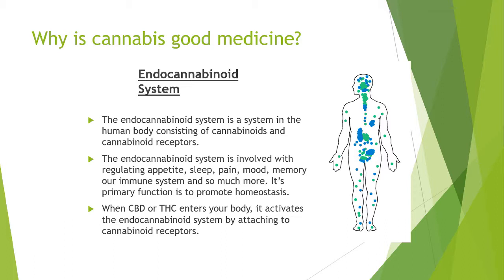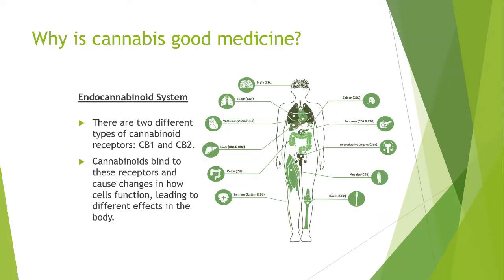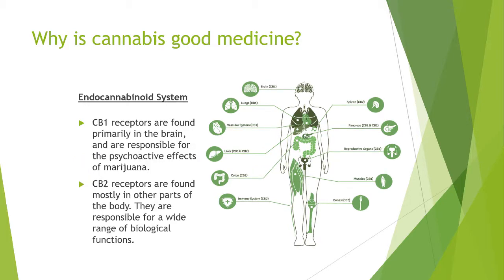When CBD or THC enters the body, it activates our endocannabinoid system by attaching to what are called cannabinoid receptors. There are two different types: CB1 and CB2. CB1 receptors are found primarily in the brain and are responsible for the psychoactive effects of marijuana. CB2 receptors are found mostly throughout the body and are responsible for a wide range of biological functions.